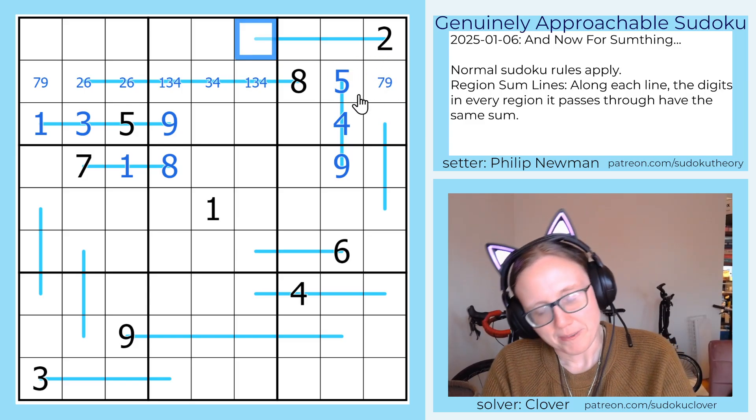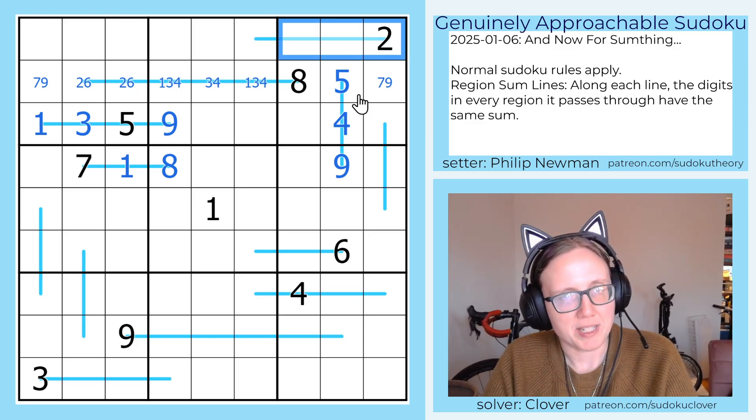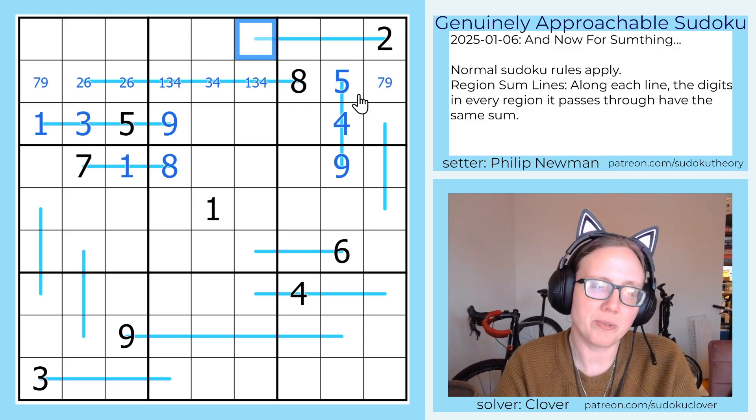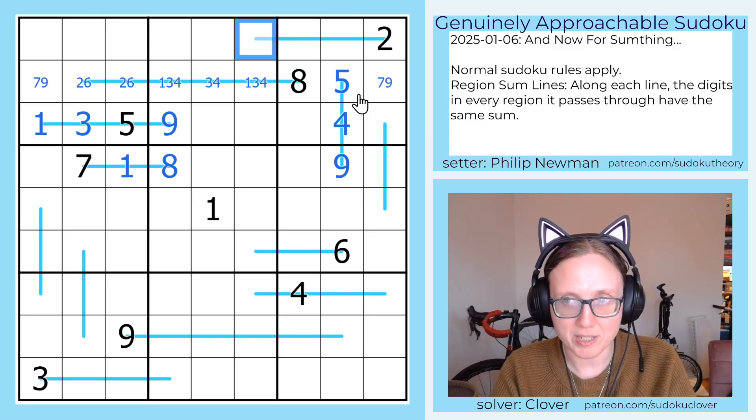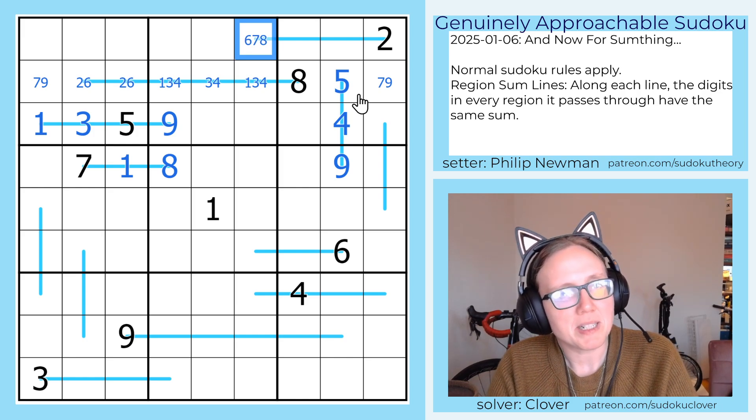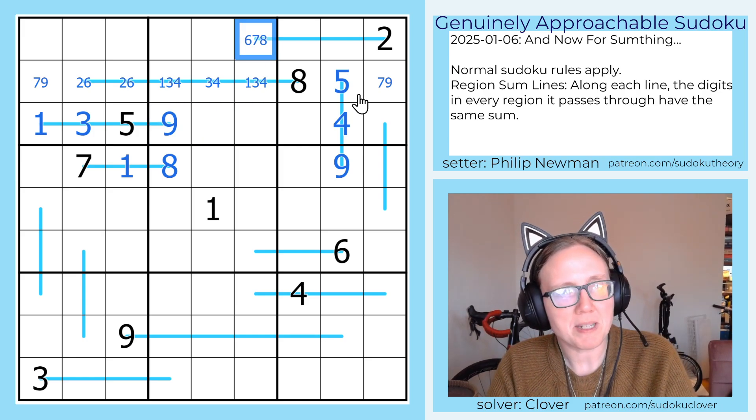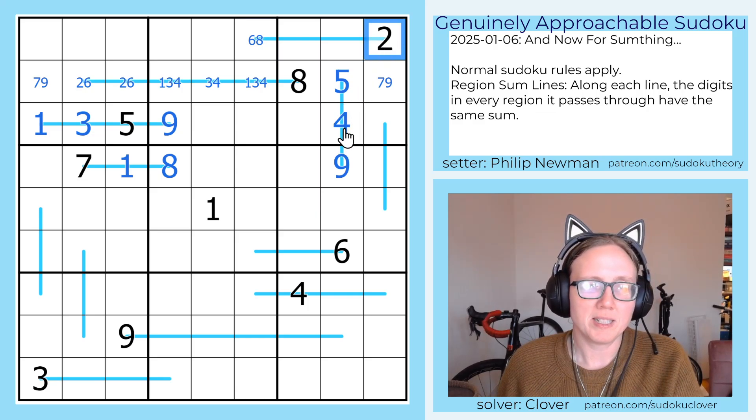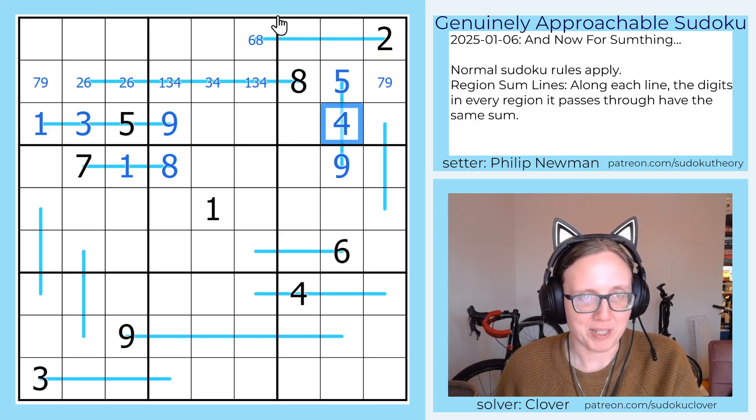Now what am I going to do here? This digit, whatever it is, is the sum of 3 cells here. The only numbers that can be the sum of 3 distinct cells in Sudoku are 6, 7, 8, and 9. Now this can't be a 9 because there's a 9 in this region. It also can't be a 7 because 7 has to be 1, 2, and 4, and we've already used up the 4 in this region.